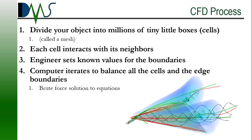Then the computer uses the power of brute force iteration to balance out all of the cells along the edges and in between all of the interactions. That is a lot of brute force solution to the equations, and there's a lot of iteration that goes on. But that's okay — computers are really good at brute force iteration. And that is the computational process. The really neat thing about this is that it's a generalized algorithm that we can apply to any geometry. It works for any situation. The same math just keeps working again and again and again.